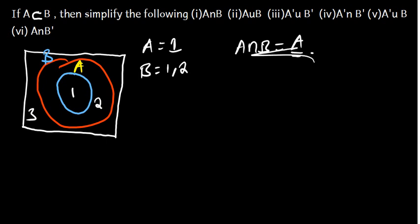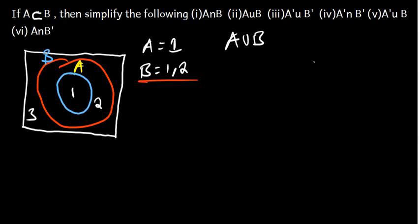Let's go to Part 2, which is A union B. We want to simplify this. A union B is just a matter of putting together the numbers which are in A and B, which is going to be 1 and 2. But 1 and 2 is the same as just B. So, A union B is just basically B.